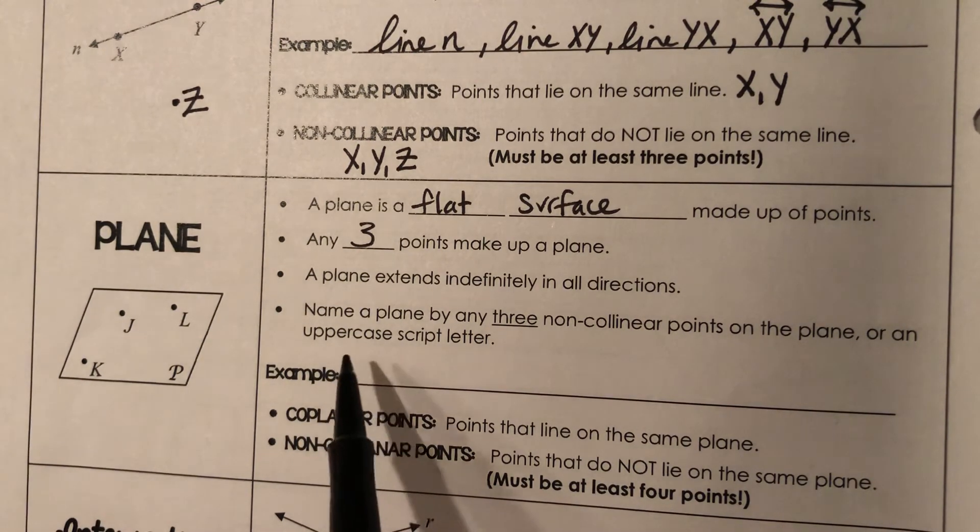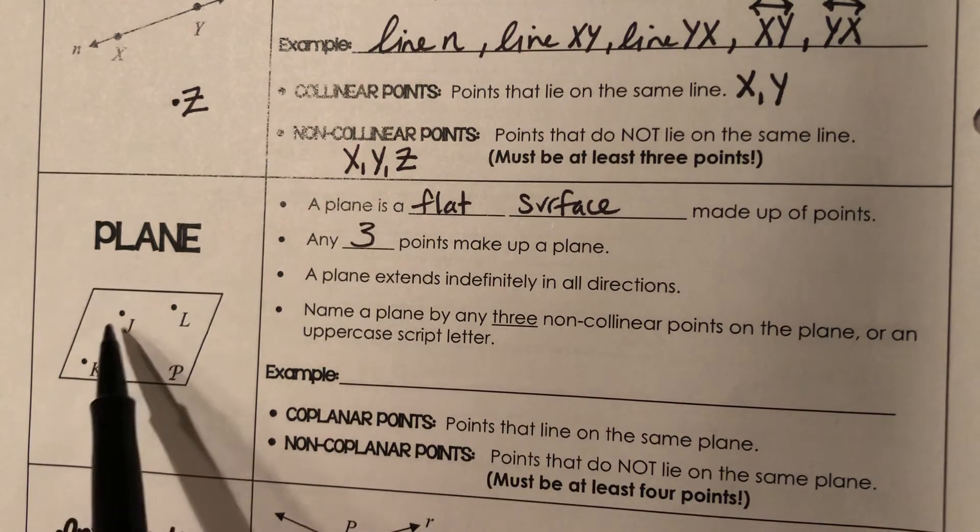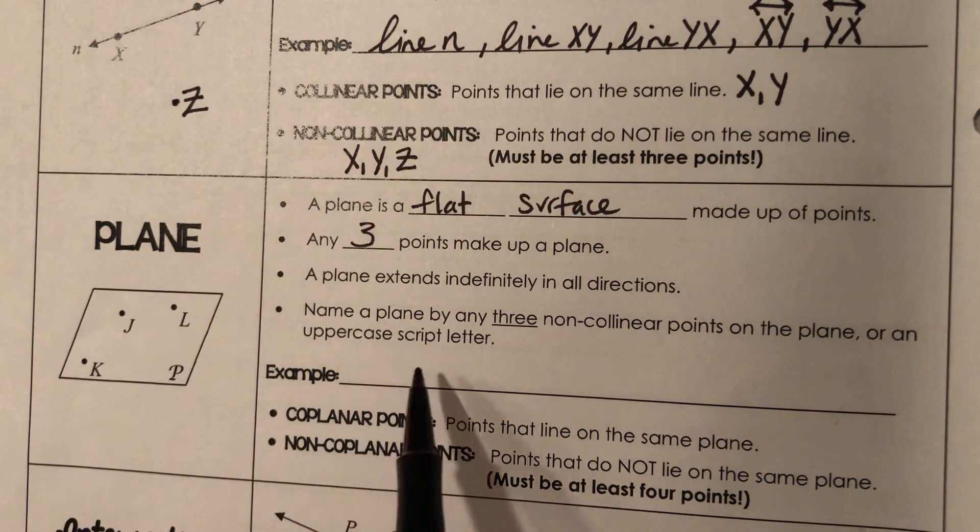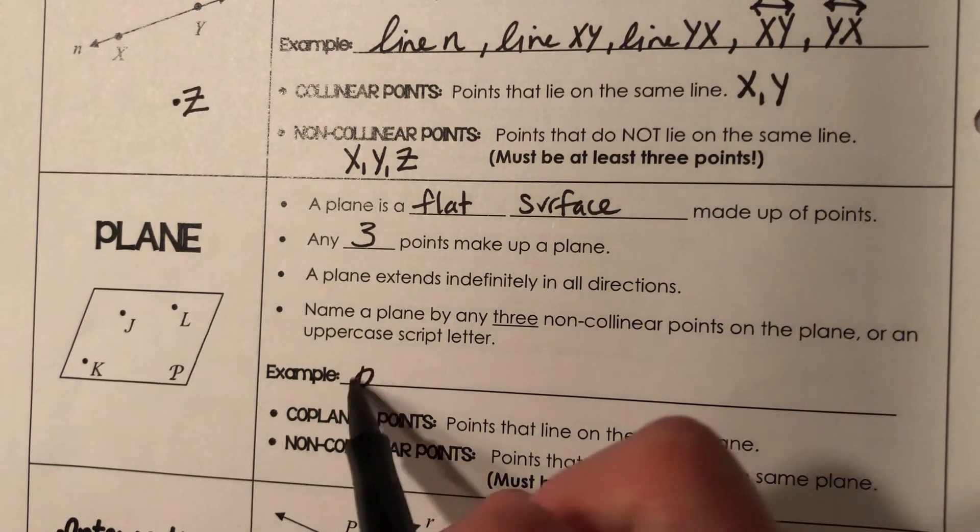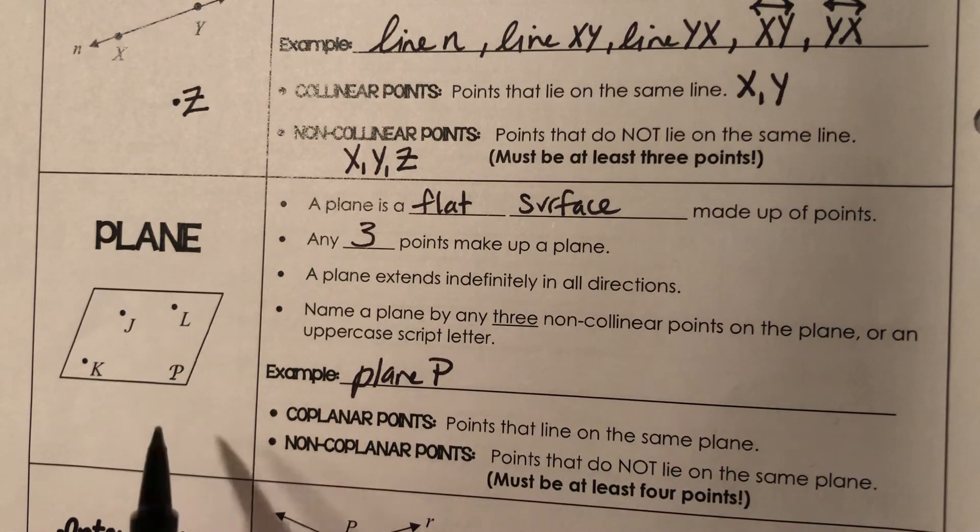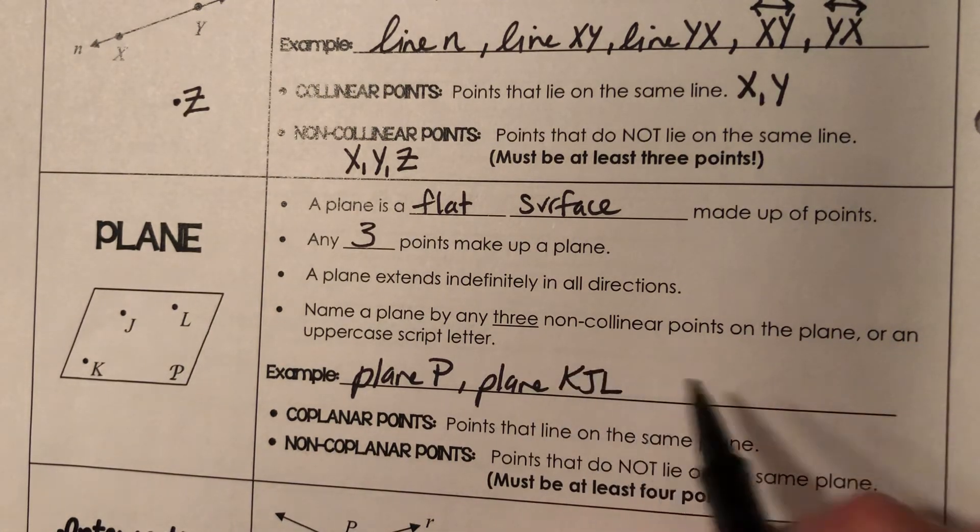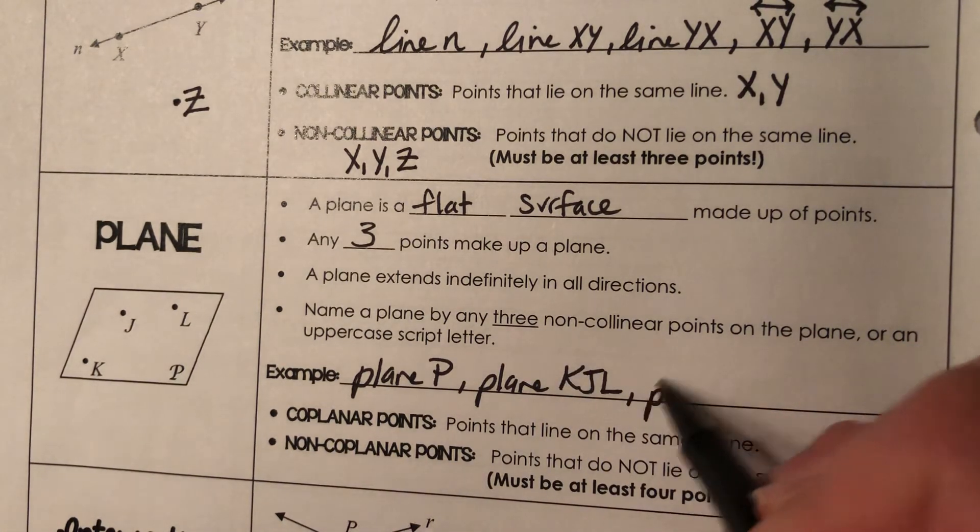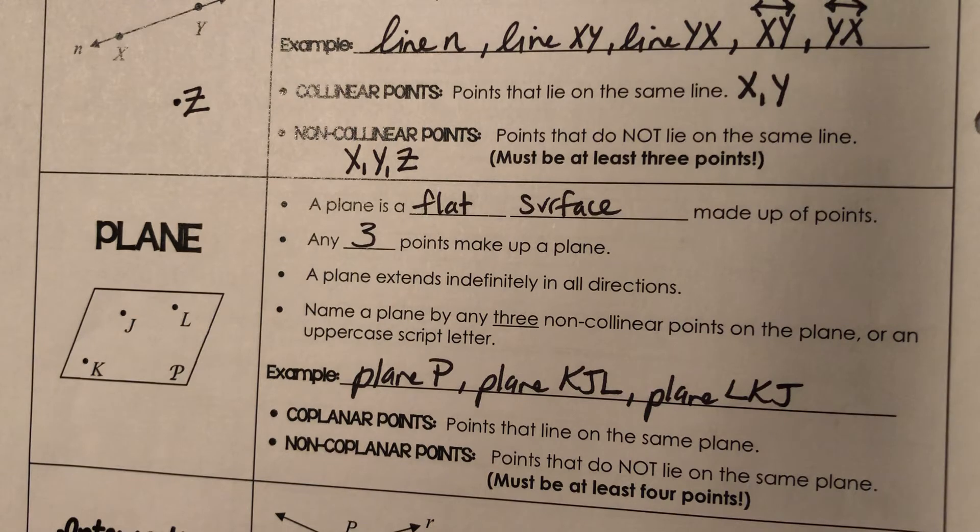And you name a plane by any three non-collinear points on the plane. So you can name it using any three of the points that you see. Or there's an uppercase script letter. So see this fancy looking P over here? So we could call this plane P by its script letter. Or you can call it plane K, J, L. Or if you want to do a different order, you could say plane L, K, J. It really doesn't matter if it's alphabetical as long as you've got three points that are on the plane.